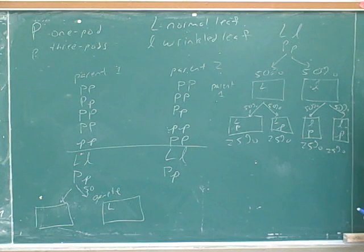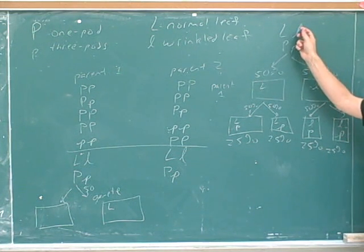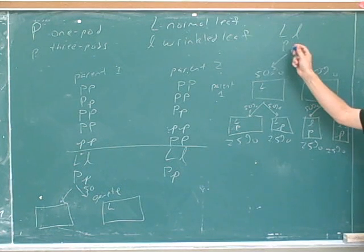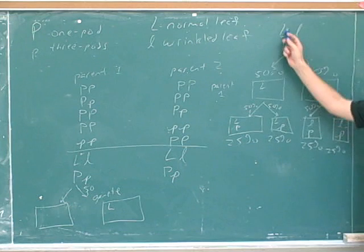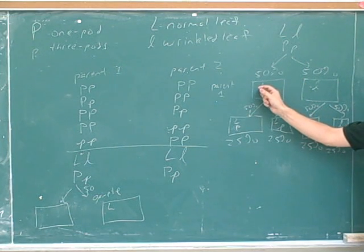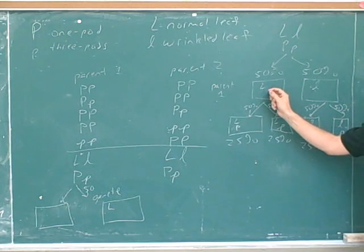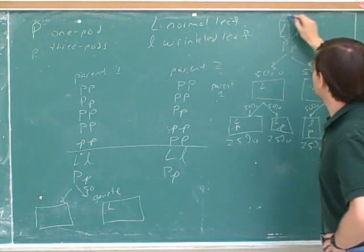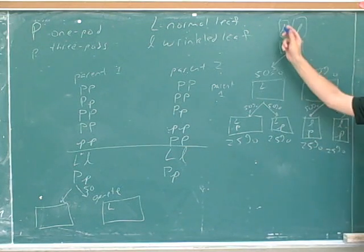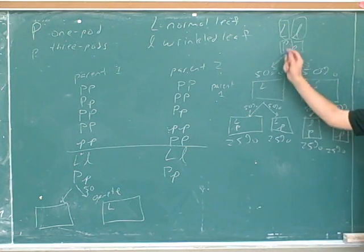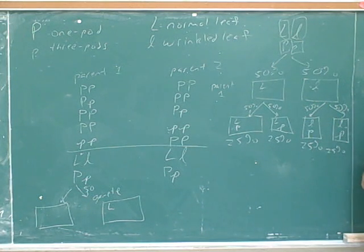They're assorting independently of each other, and you can see why. Let's say the capital L is on one chromosome, the lowercase l is on a homologous chromosome, and the P alleles are on a separate pair of chromosomes. If this chromosome moves into one particular gamete, that doesn't give you any information about which of the two P chromosomes is going to move into that gamete. So if these are all on separate chromosomes, knowing that you got the capital L chromosome doesn't tell you anything about which P chromosome you're going to get. They're assorting independently of each other.